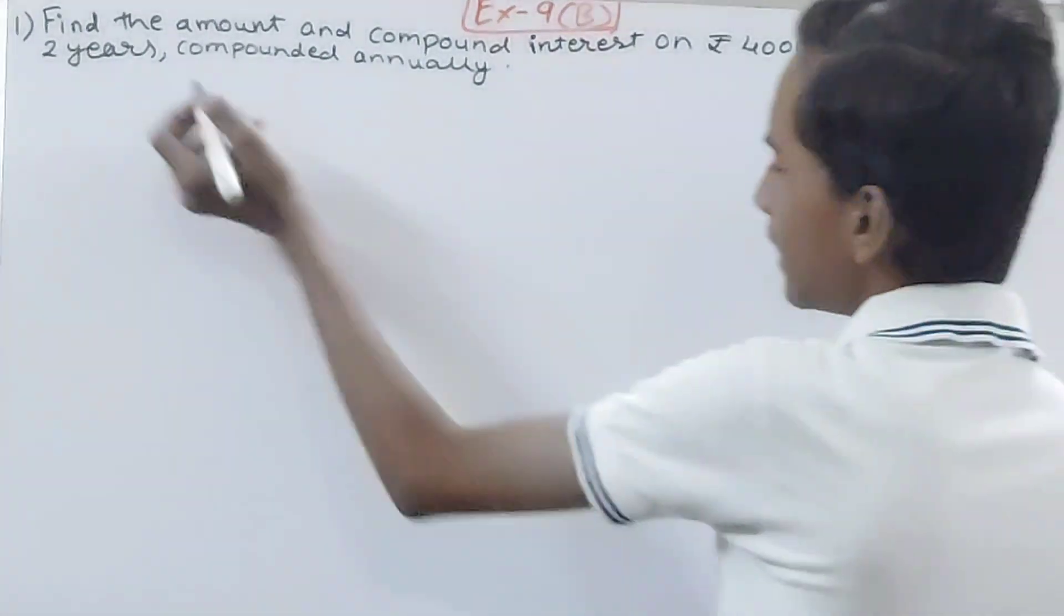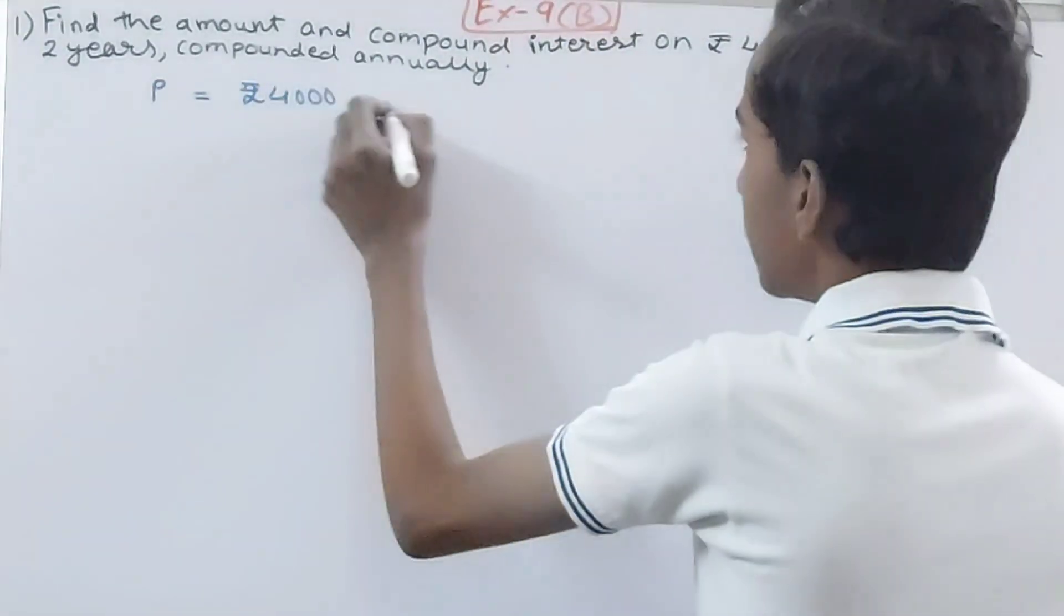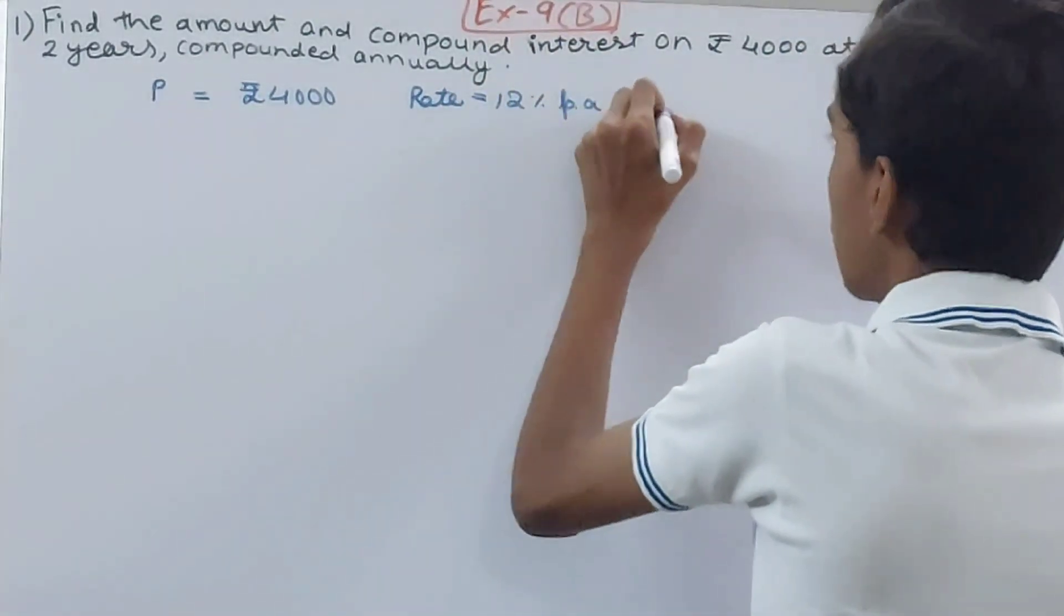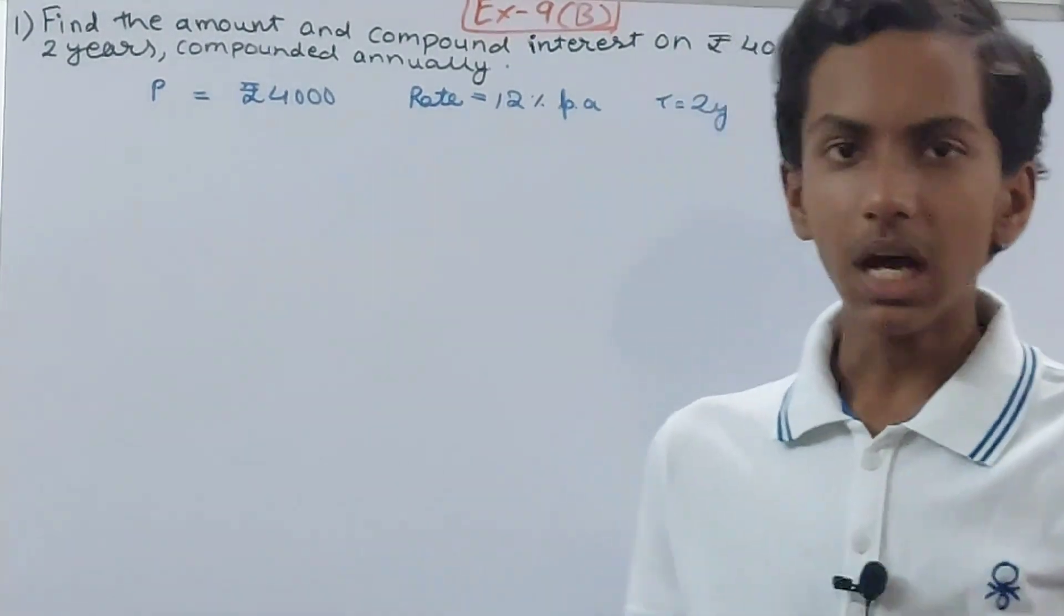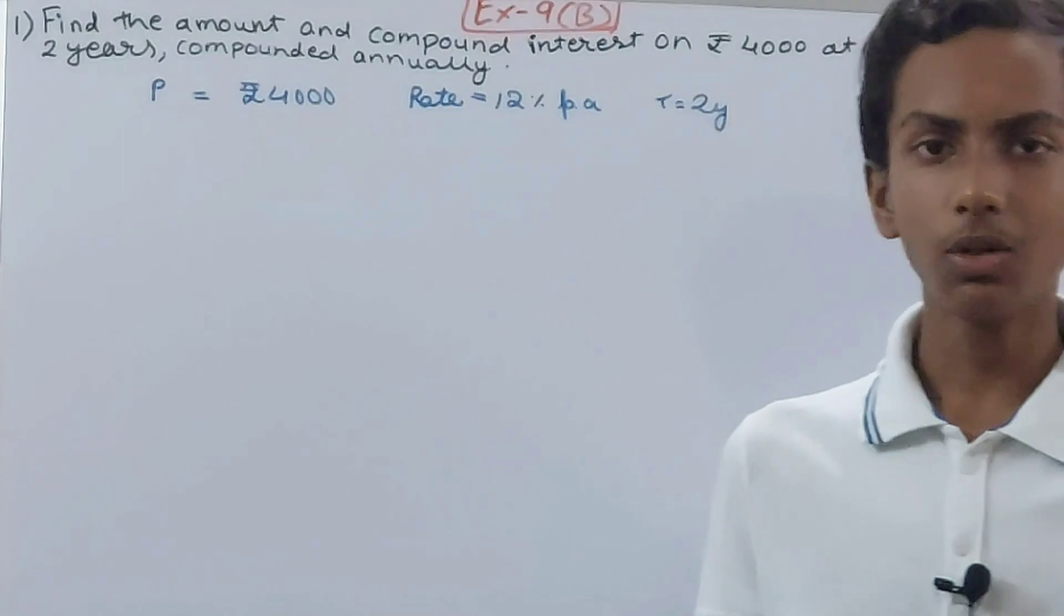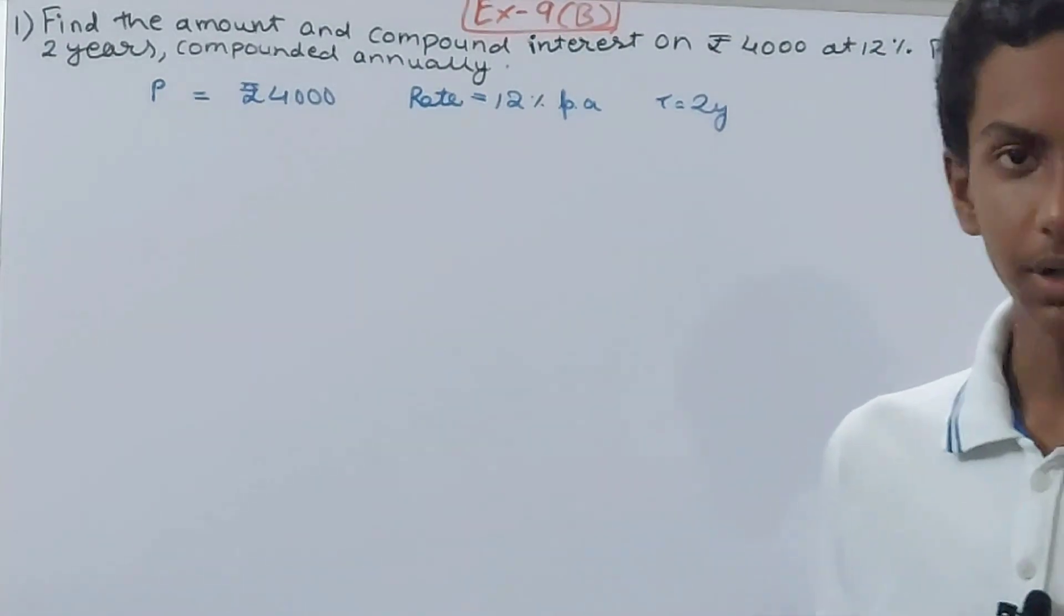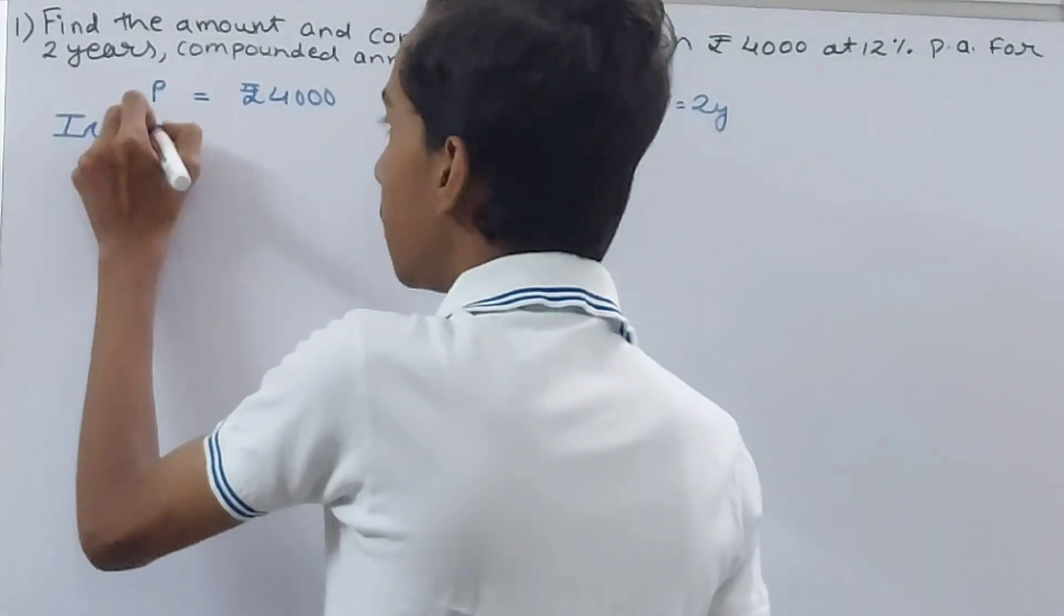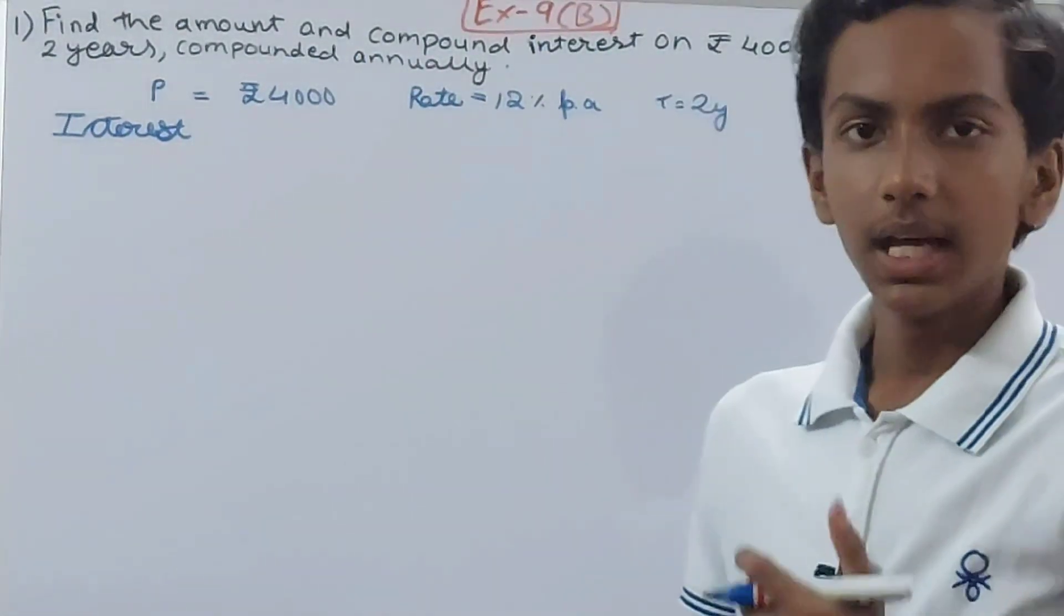Let's just start with the question. Here you can see the principle is rupees 4000, and the rate is 12% per annum, and the time is two years. Now what we will do is—without using a proper formula—there is a formula for finding compound interest as well, but since that is not introduced in this exercise, we will continue with the normal way, the longer way. We will not use any formula. We will calculate the interest per year because it is saying here compounded annually, so that means every year the interest is added.